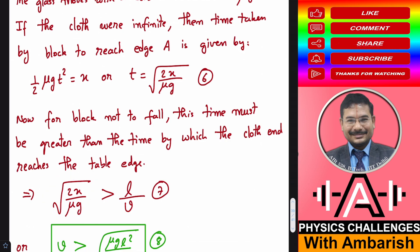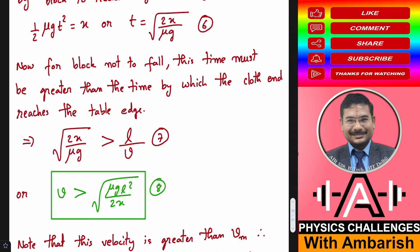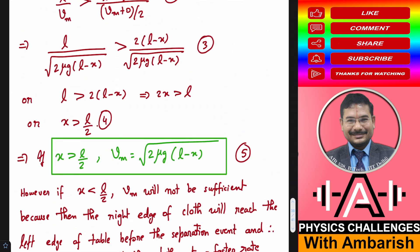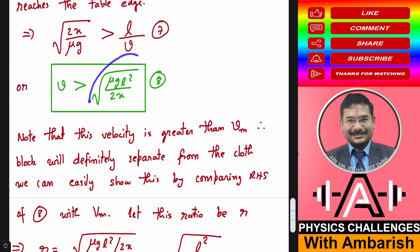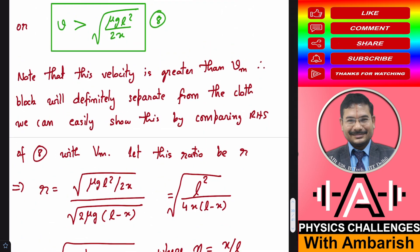Rearranging, we get V > L sqrt(mu g / 2x). This is equation 8. We still need more velocity in this case. Comparing the RHS of equation 8 with vm = sqrt(2 mu g (L - x)): taking the ratio R and simplifying by substituting eta = x/L, we get R = sqrt(1 / (4 eta (1 - eta))). This ratio R is minimized when eta(1 - eta) is maximized, which occurs at eta = 1/2, giving minimum R = 1.